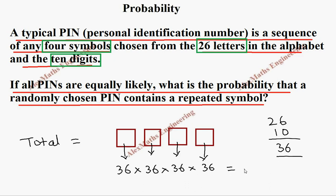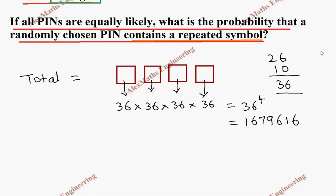So the total is 36 to the power of 4. After calculation, the value is 1,679,616. Now they are asking for the probability that the PIN contains a repeated symbol, so we need to find the number of PINs without repetition.